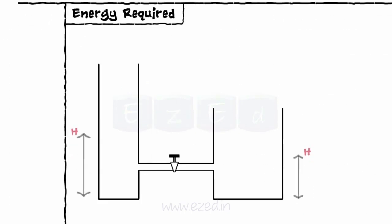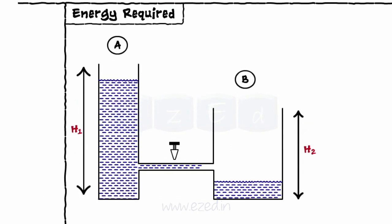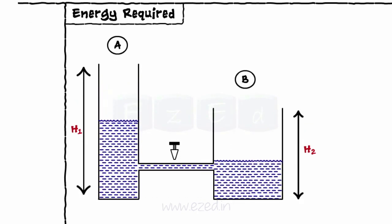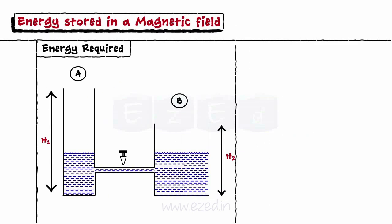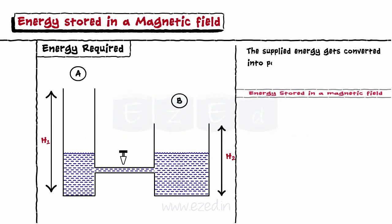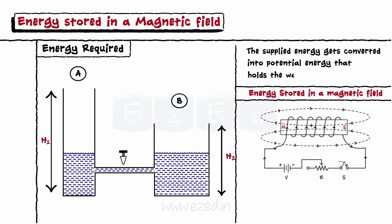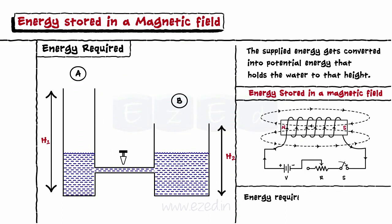We know that energy is required only to raise water to certain heights, say H, but it's not required to keep the water at that height. The supplied energy gets converted into potential energy that holds the water to that height. Similarly, energy is required to establish the magnetic field in the magnetic circuit, but it is not required to maintain it.